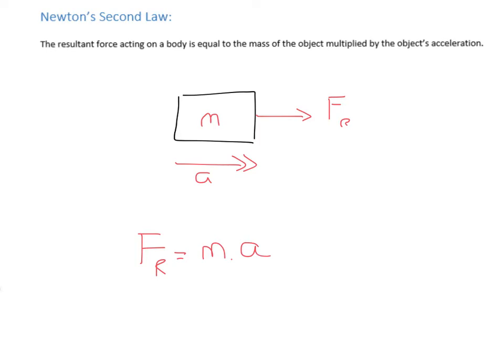Where it gets slightly more confusing is if you are applying a tension force via a rope but also have friction acting on the object. In that case the resultant force would be the tension minus the friction, and that would be equal to mass times acceleration. It is the resultant force — the force actually causing acceleration — not the force overcoming friction.